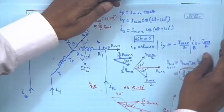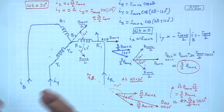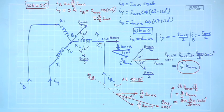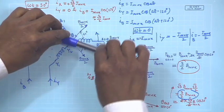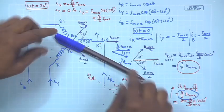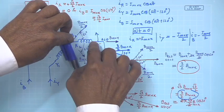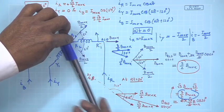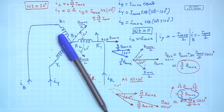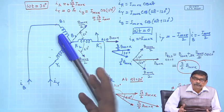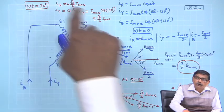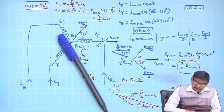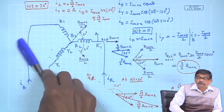One can go on doing this — take another instant, omega t equal to 60 degrees. You will find the resultant field strength once again remains 3 by 2 B max. It was initially at omega t equal to 30 degrees, then moved; at omega t equal to 60 degrees you will see it has gone by 60 degrees, with strength remaining the same. So it looks as if a field of amplitude 3 by 2 B max is moving in the clockwise direction in space.